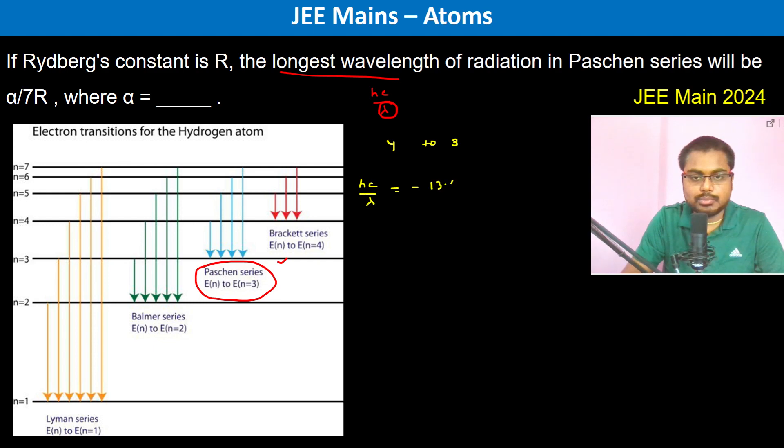minus 13.6 electron volts into 1 by 4 square minus 1 by 3 square. Now we have 1 by lambda is equal to minus 13.6 electron volts divided by hc. So this is 16 into 9, this is 9 minus 16.